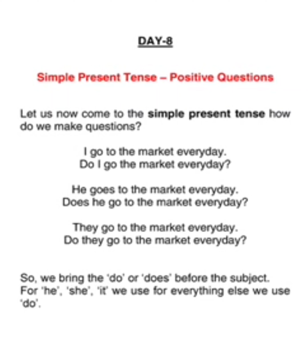I go to the market every day. → Do I go to the market every day? He goes to the market every day. → Does he go to the market every day? You have 'he' here, so you have 'does'. They go to the market every day. → Do they go to the market every day? So we bring 'do' or 'does' before the subject. For he, she, it we use 'does'. For everything else we use 'do'.